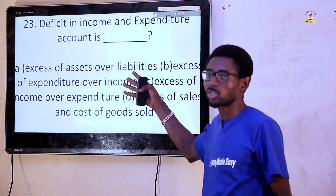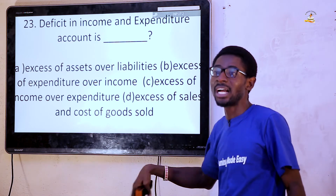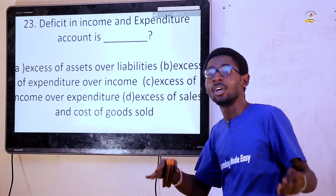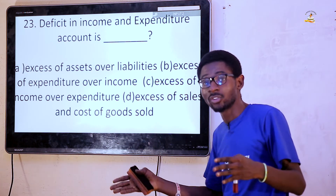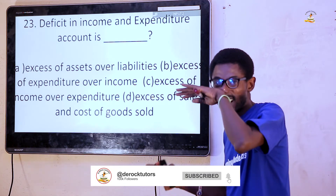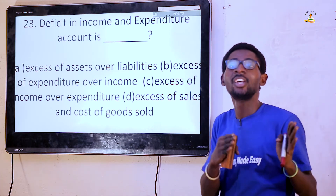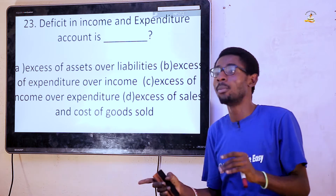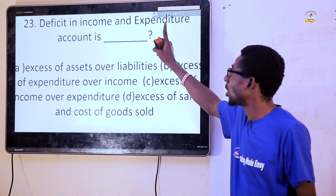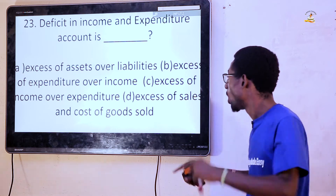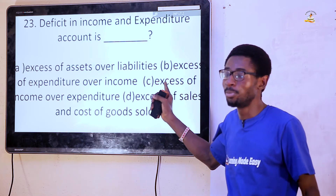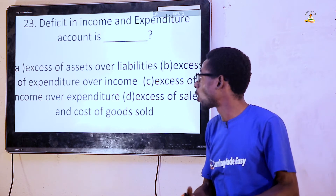Income and expenditure accounts is the same thing as profit and loss for a sole trader. You only have net loss when your expenditure is more than your income, which is the same thing as a deficit — when expenditure is more than income. So the answer is option B: excess of expenditure over income.